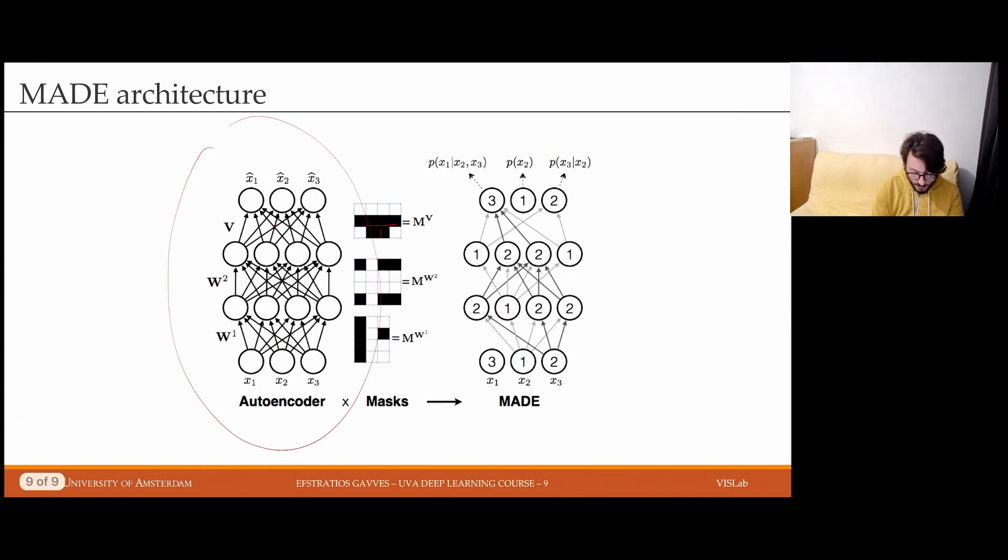And the MADE architecture here is quite intuitively obtained by applying the mask on the original neural network. However, it is not very different in a way from dropping out connections, right? So here we're going to keep only those weight elements in our matrices that abide by the autoregressive property. And that's how we're going to compute one dimension at a time.